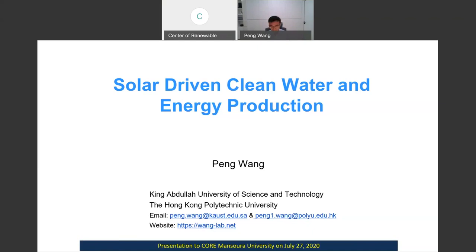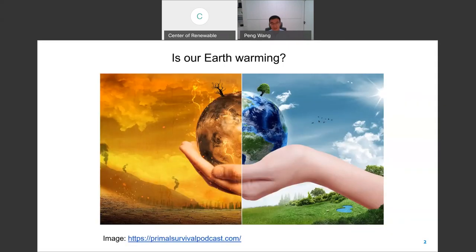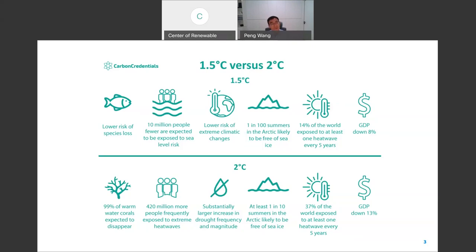I'll start by saying that whether you are a believer of global warming or not, the year 2020 is on track to be one of the hottest years ever recorded. The Paris Agreement called to do whatever it takes to limit global warming to 1.5 degrees Celsius. However, it looks like we cannot meet that target. Now we have our second target of 2 degrees Celsius, and the scenario under 2 degrees Celsius warming is much worse than 1.5 degrees.